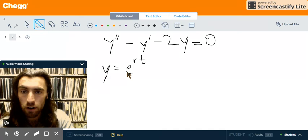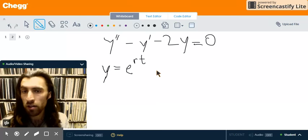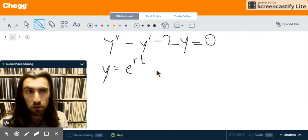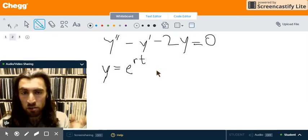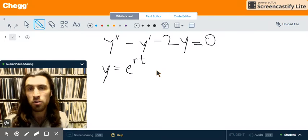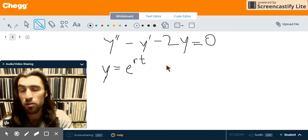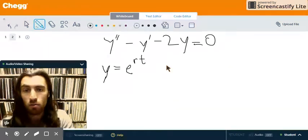So, r in this case is any constant, like 3 or 5 or something like that. And what we have to do is plug this back into the equation to figure out what r has to be to solve the equation. So let's do that. And to do that, we're going to have to take the first and second derivatives of y.